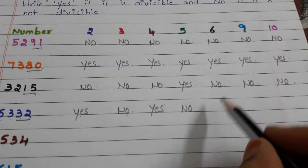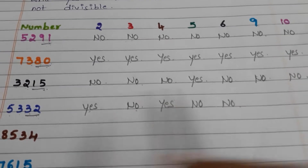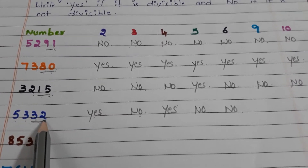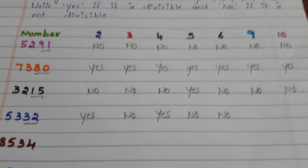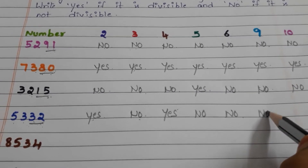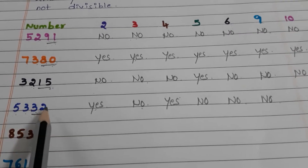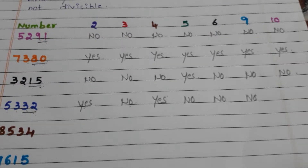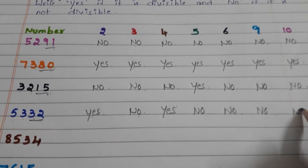What about 9? 5 plus 3 is 8, 8 plus 3 is 11, 11 plus 2 is 13. 13 is not a multiple of 9, so it is not divisible by 9 — write no. In the units place 2 is there, but 0 should be there for 10, so it is not divisible by 10 — write no.